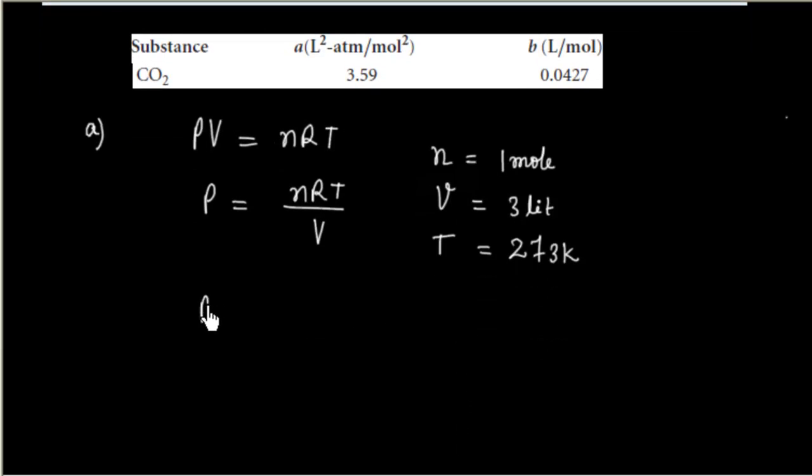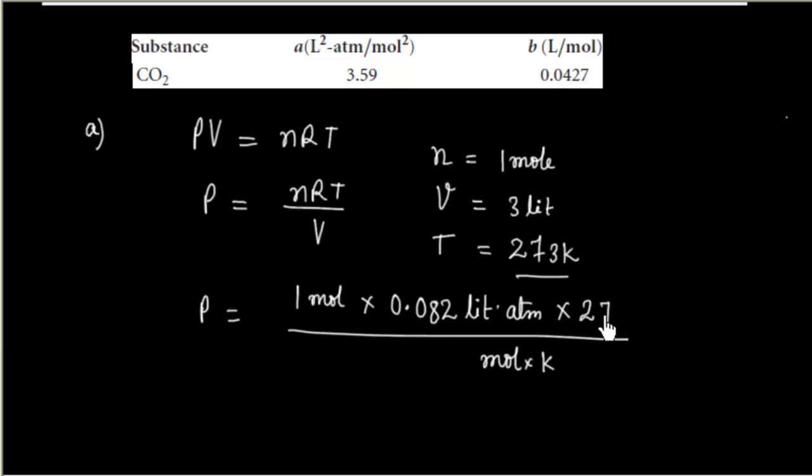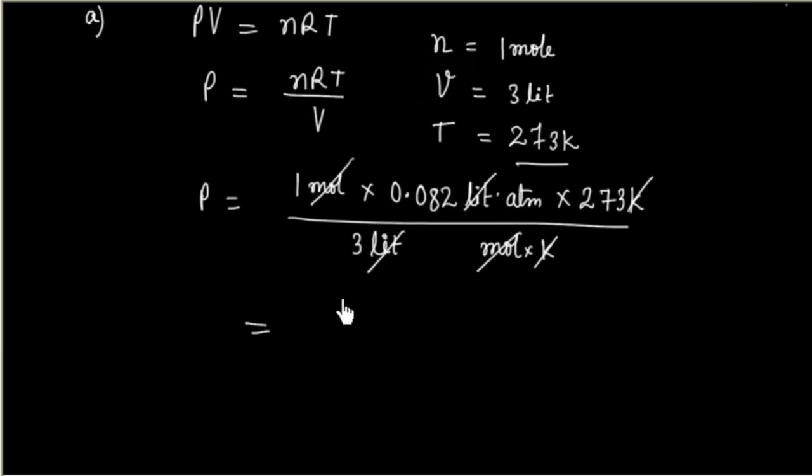We can calculate pressure. This is 1 mol, and R is 0.082 liter atmospheric pressure divided by mol Kelvin. Temperature is 273 Kelvin, and divided by volume, volume is 3 liter. Kelvin cancels, mol cancels, so we will have 0.082 times 273 divided by 3 atmospheric pressure.